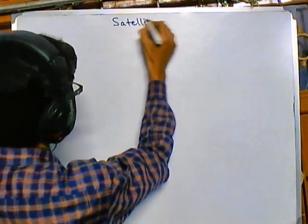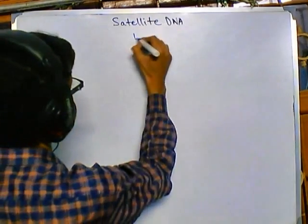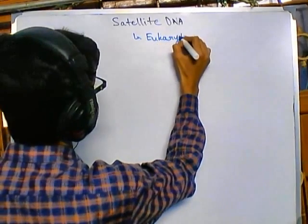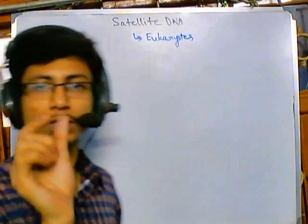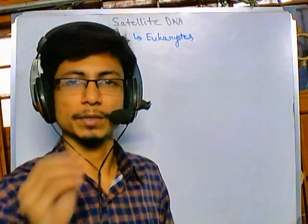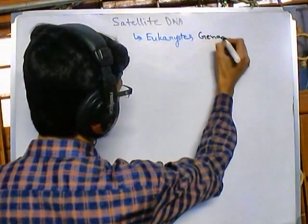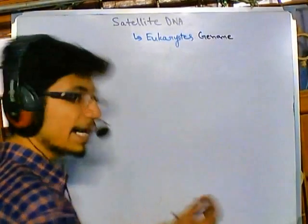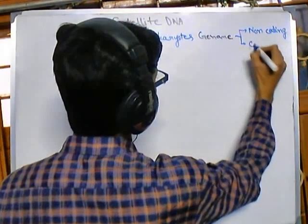Welcome back friends. In this short video section we'll be talking about satellite DNA, or DNA satellite molecules, which are found in eukaryotic systems. Now the eukaryotic genome is very large and made up of many different types of sequences — some coding, some non-coding. In the total eukaryotic genome, we have maximum non-coding sequences and very few coding regions.